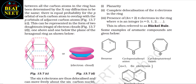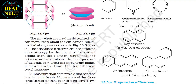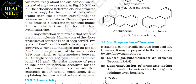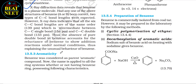The internuclear distance between all carbon atoms in the ring has been determined by X-ray diffraction to be the same. There is equal probability for the p orbital of each carbon to overlap with p orbitals of adjacent carbons. This can be represented as two doughnuts of electron cloud, one above and one below the plane of the hexagonal ring. The six pi electrons are delocalized and move freely about all six carbon nuclei. The delocalized pi electron cloud is more strongly attracted by the carbon nuclei than a localized electron cloud, making benzene more stable than hypothetical cyclohexatriene. X-ray diffraction confirms benzene is planar, and all C–C bond lengths are equal at 139 pm — intermediate between C–C single bond (154 pm) and C=C double bond (133 pm).